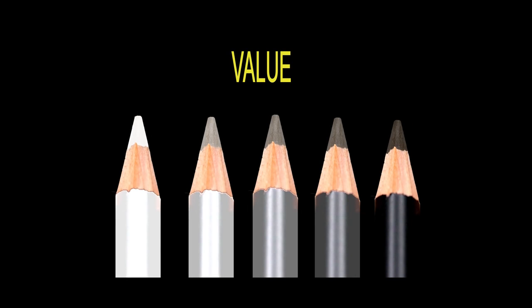Value. The value of a color describes its relative lightness or darkness. The highest value is pure white. The lowest value is black. The higher the value, the brighter the color.